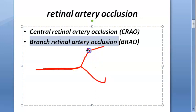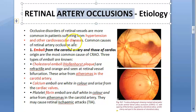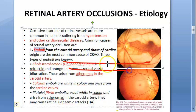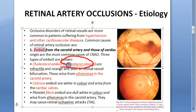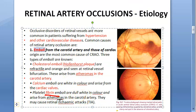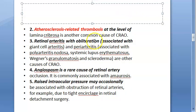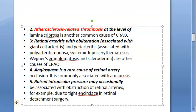For the retinal artery to get occluded, there are many reasons. Hypertension, other cardiovascular diseases, and emboli from the carotid artery are common causes. Types of emboli include cholesterol emboli — called Hollenhorst plaques — atheromas in the carotid artery, calcium emboli arising from cardiac valves, and platelet fibrin emboli. These can cause occlusion of either the central or branch retinal arteries.